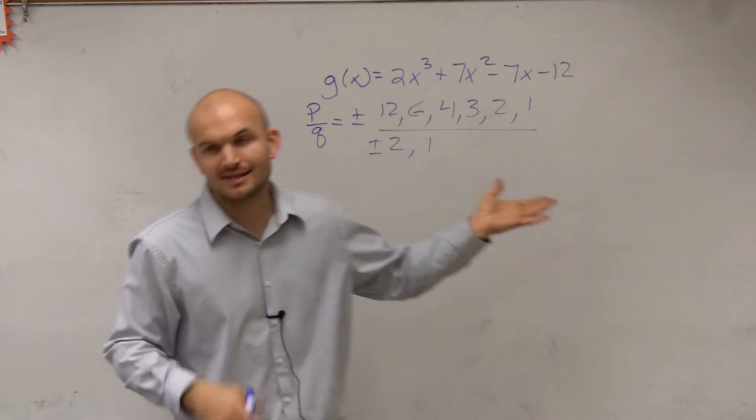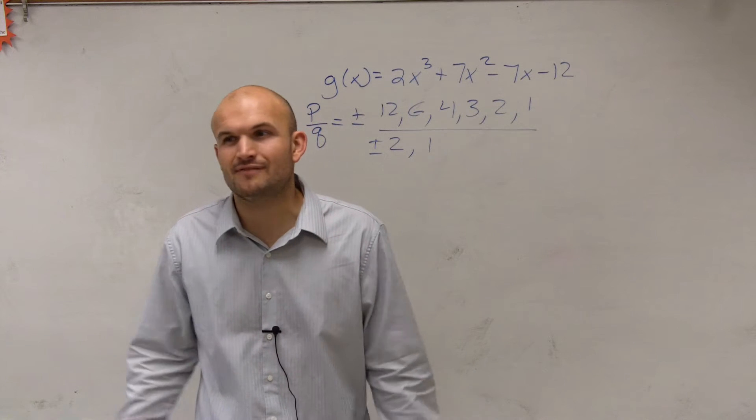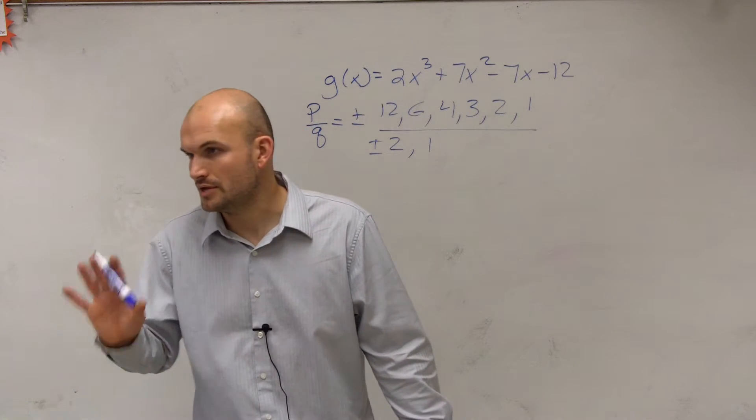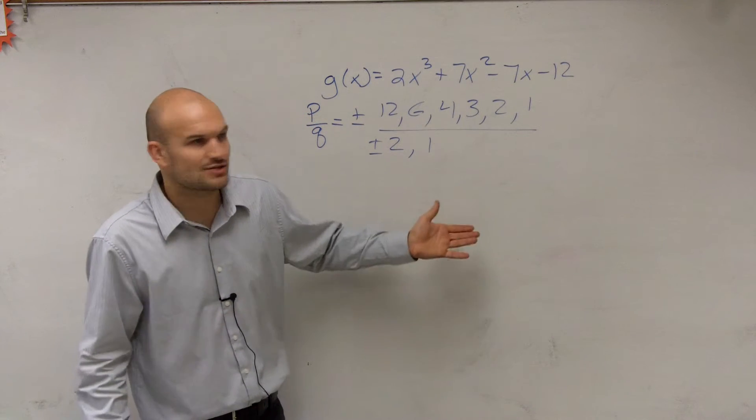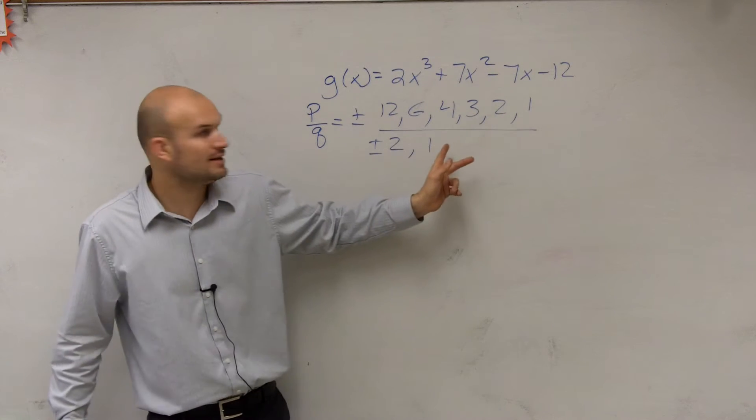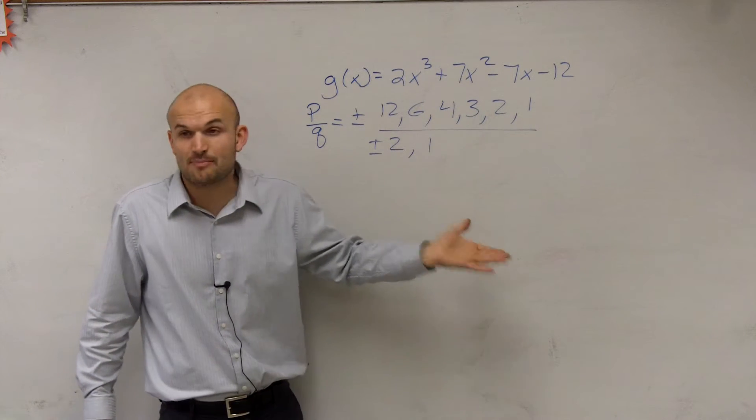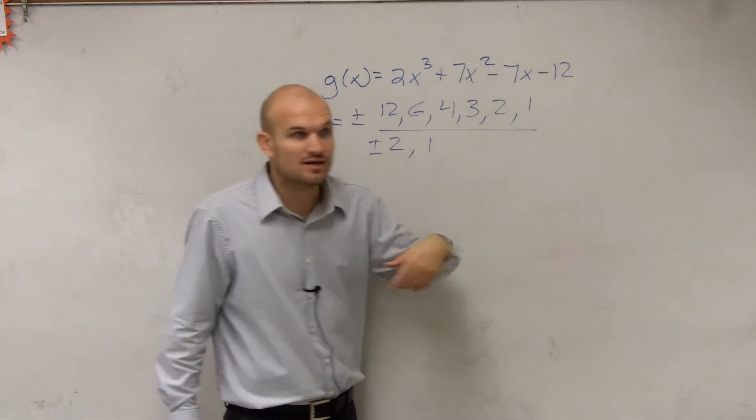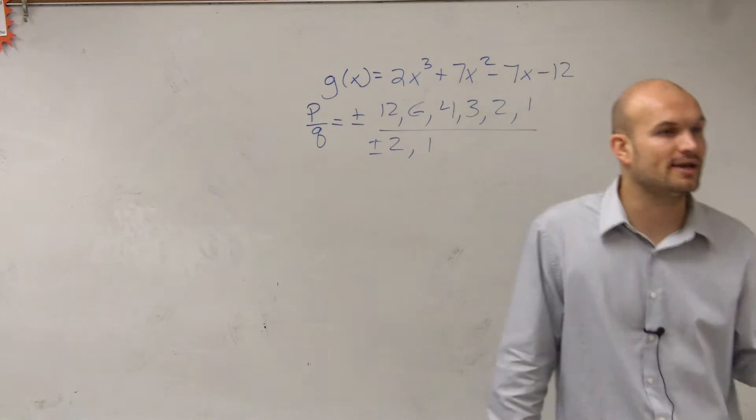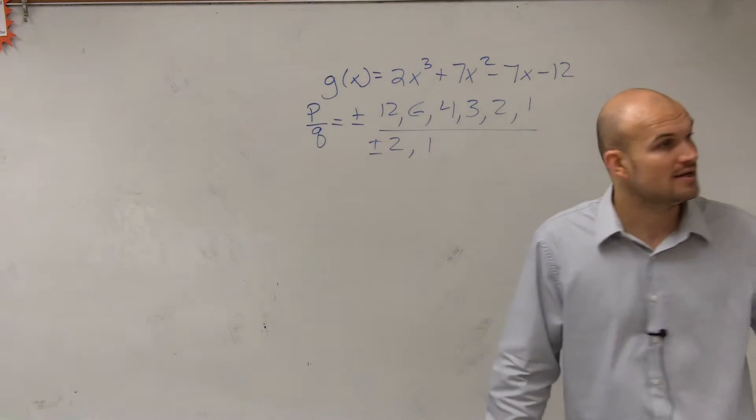Now, if you guys look at this, I could list all the possible p's over q's, but do I even want to use all those? No. Now, the best rational zero, I know that 1 over 1 or 2 over 2, that's going to produce a rational zero of 1.